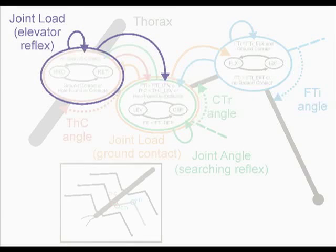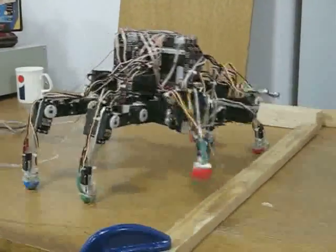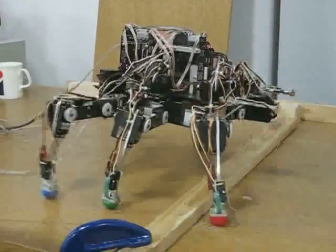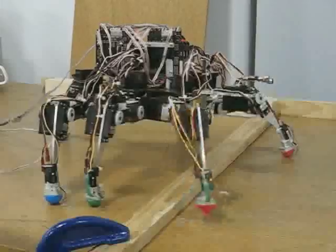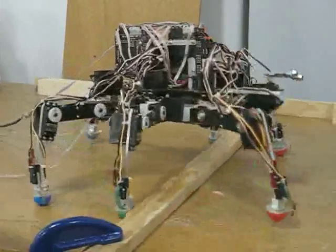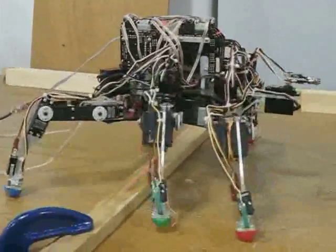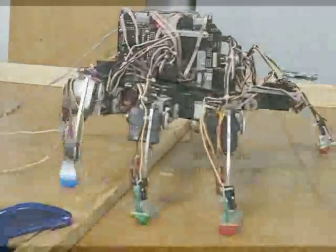By adding simple obstacle collision sensory paths to the leg control method, an elevator reflex behavior can be created that allows the robot to step over surmountable obstructions. For this robot, obstacle detection has been implemented by means of a contact switch near each foot.